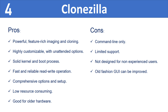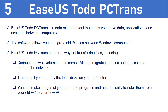The fifth data migration tool is EaseUS Todo PCTrans. It is a data migration tool that helps you move data, applications, and accounts between computers, allowing you to migrate old PC files between Windows computers. It has three ways of transferring files: connecting the two systems on the same LAN to migrate files and applications through the network, transferring all data via local disks, or making images of your data and programs and automatically transferring them from your old PC to your new PC.